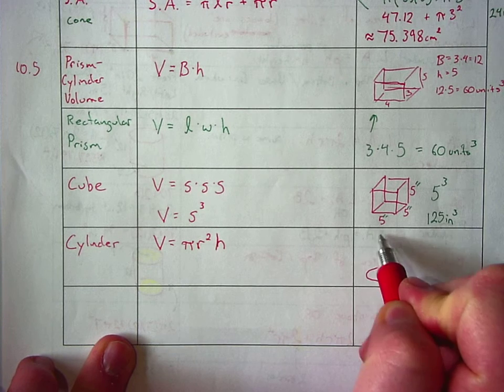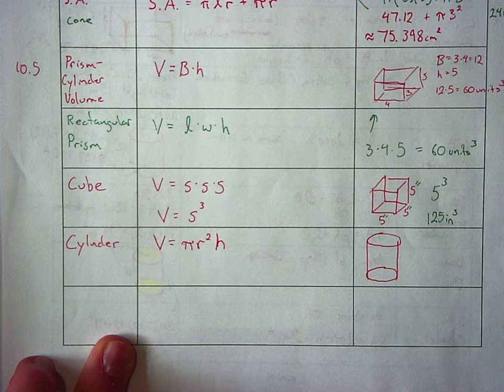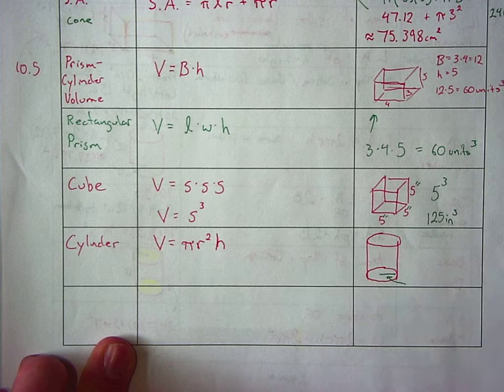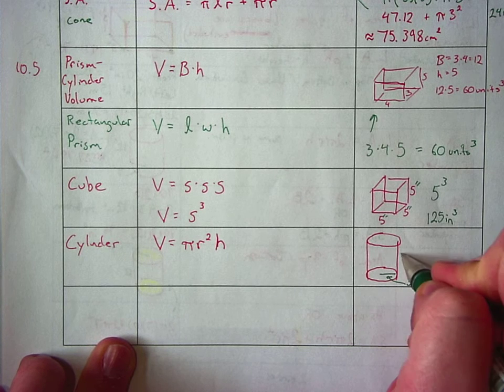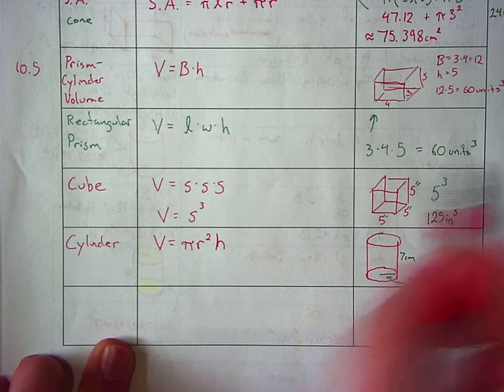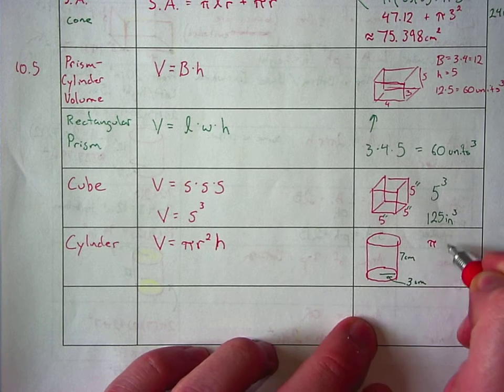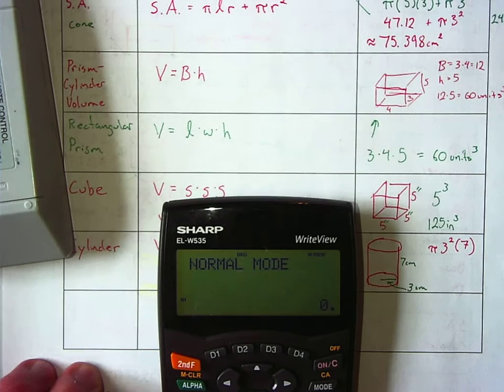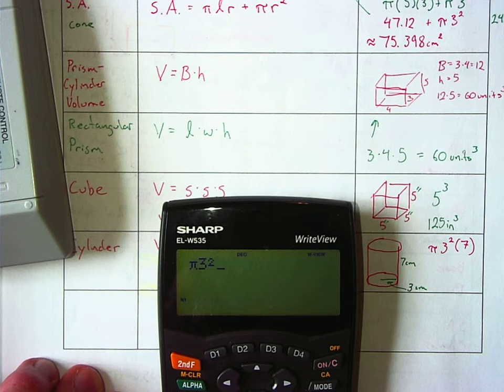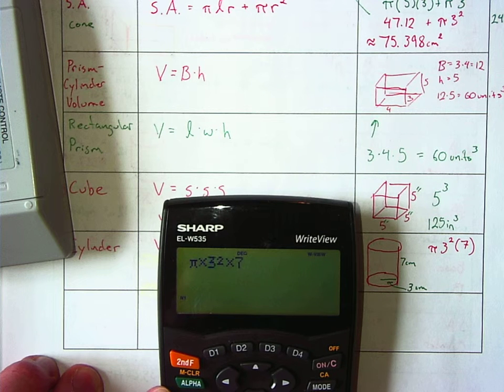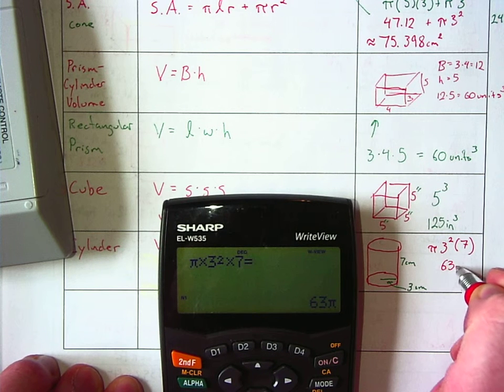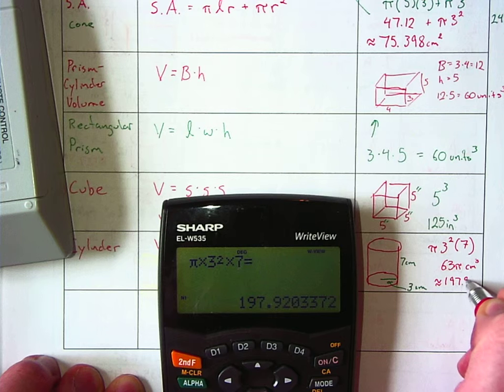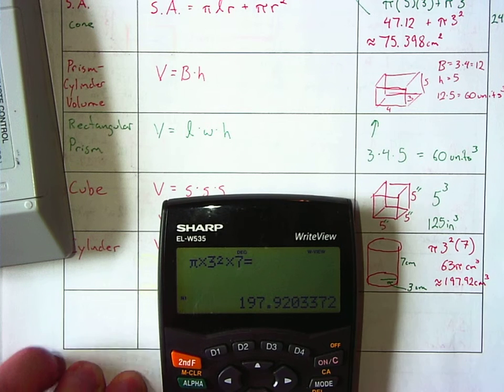So let's draw a cylinder. Let's pick a couple numbers. How about three centimeters and seven centimeters? We'll just plug it right into the formula, folks. And it wants the times sign there. So it's either 63 pi cubic centimeters or approximately 197.92 cubic centimeters.